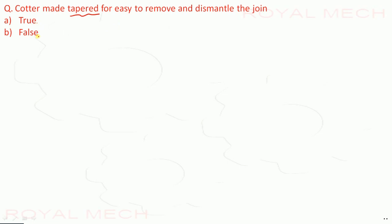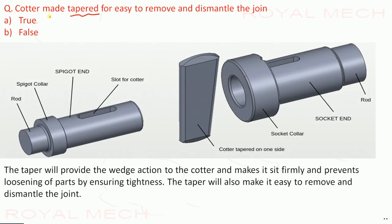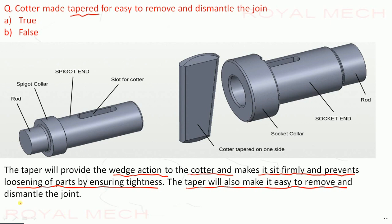Is it true or false that the taper of the cotter is for easy removal and dismantling of the joint? The taper provides wedge action, makes the joint fit firmly, and prevents loosening. The taper will also make it easy to remove and dismantle the joint. Therefore this statement is true. Thank you.